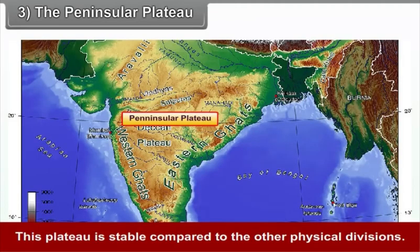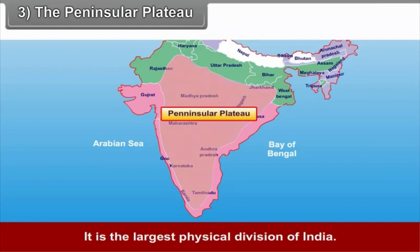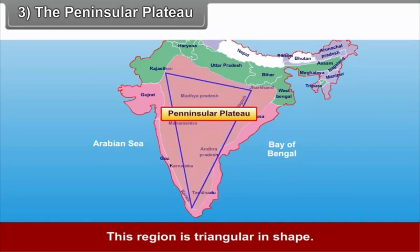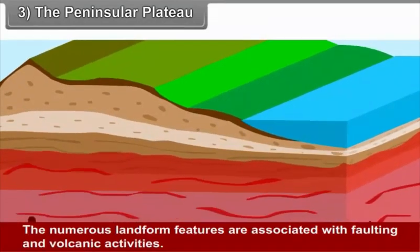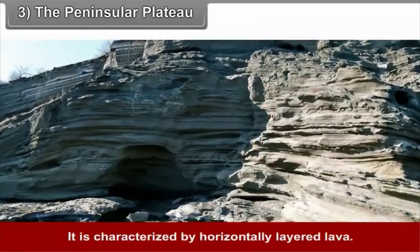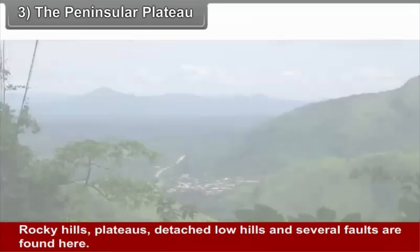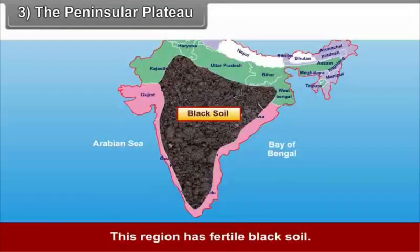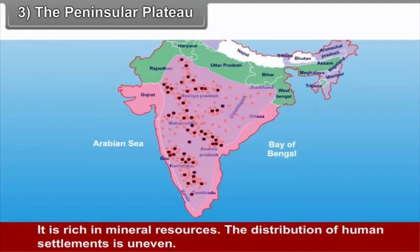The Peninsular Plateau is stable compared to the other physical divisions. It is one of the oldest landmasses in the world and the largest physical division of India. Triangular in shape, it is composed of very old igneous and metamorphic rocks. Numerous landform features are associated with faulting and volcanic activities, and it is characterized by horizontally layered lava. Rocky hills, plateaus, detached low hills, and several falls are found here. This region has fertile black soil and is rich in mineral resources, though the distribution of human settlements is uneven.